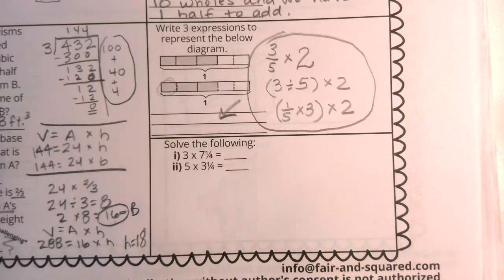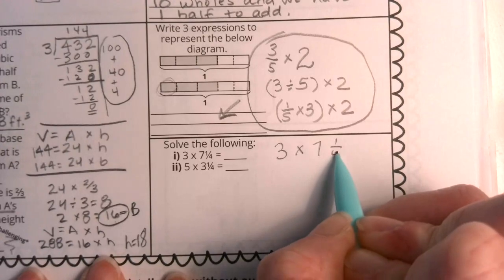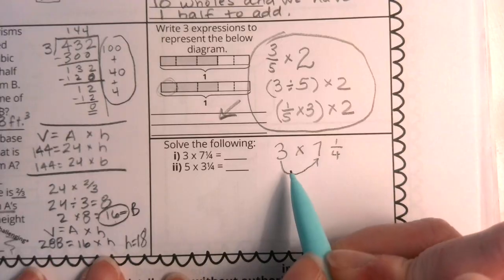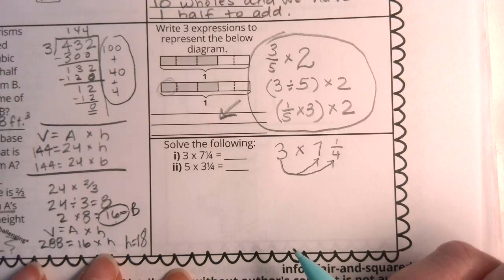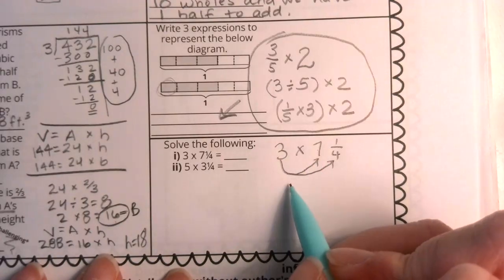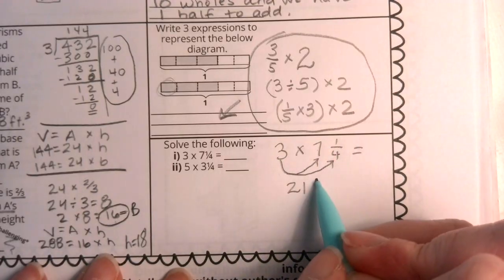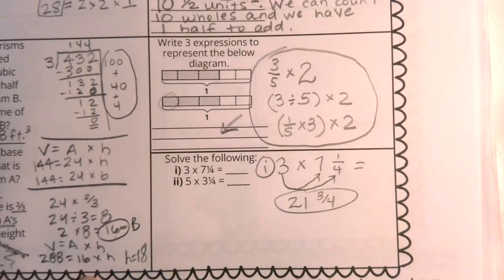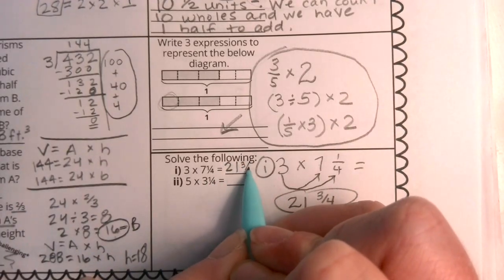Let's take a look at these problems down below. I have three times 7 1/4. Well, remember, this three has to multiply itself by the seven, and it has to multiply itself by the one-fourth. That's like the distributive property. So, three times seven gives me 21, and three times a fourth gives me three-fourths. So, this one doesn't really need any simplifying or anything. I'm already at the correct answer for number one. So, let's record that we've got 21 and three-fourths.